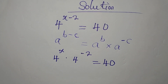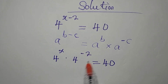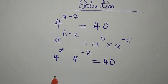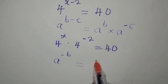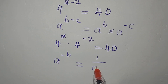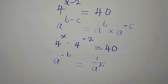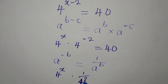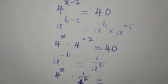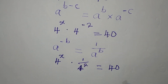Now, what again can we do? Remember this right here: if you have a to the power of negative b, this is the same thing as 1 over a to the power of b. So because of that, here now I'm going to have 4 to the power of x multiplied by 1 over 4 squared, and everything is equal to 40.